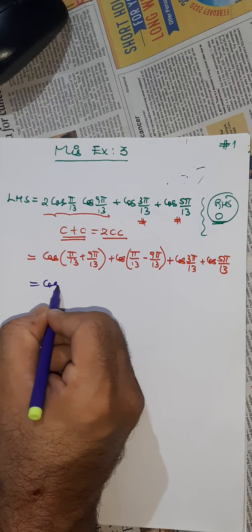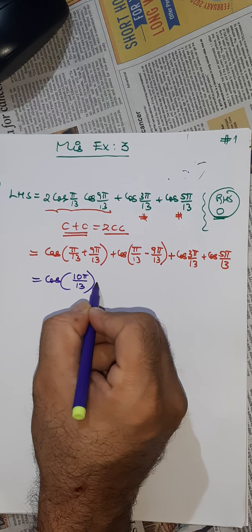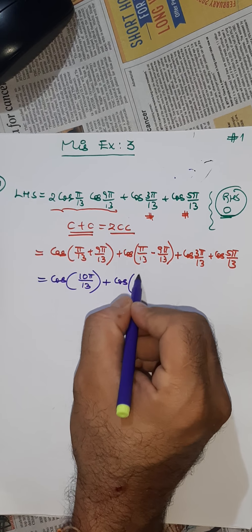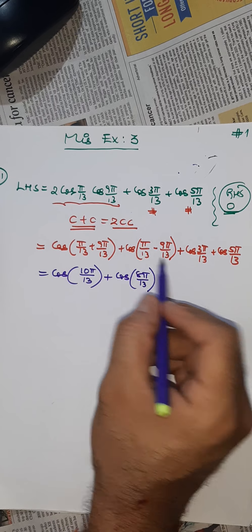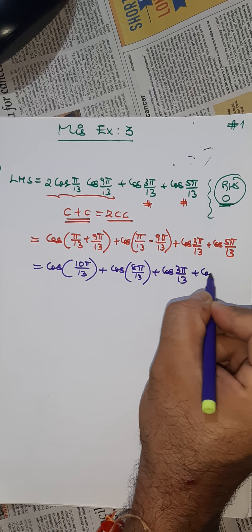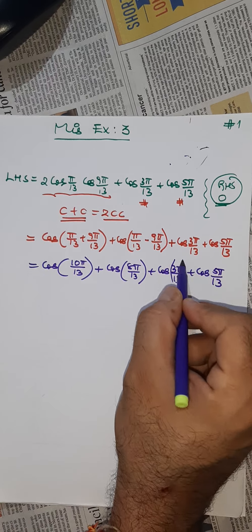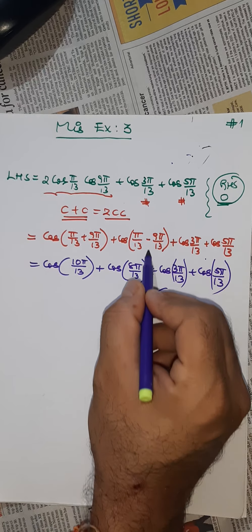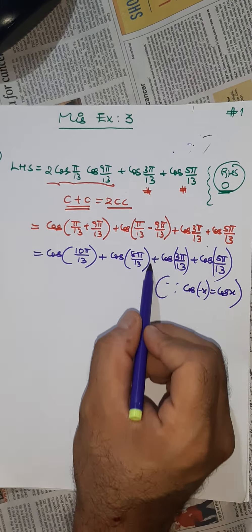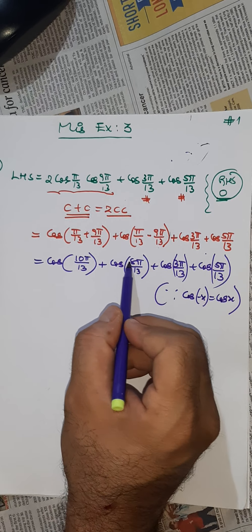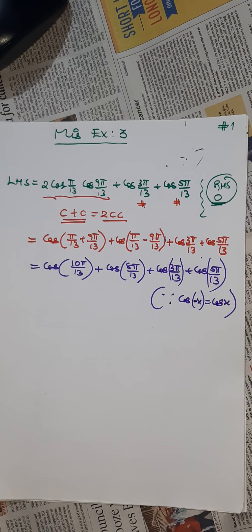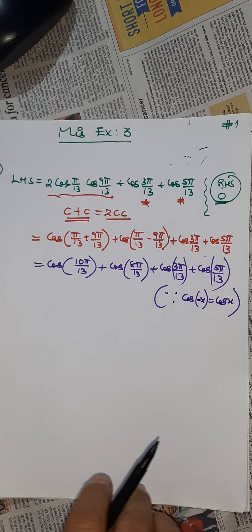Now we simplify: this equals cosine(10π/13) plus cosine(−8π/13). But cos is an even function, so I'm writing cosine(8π/13). Then plus cosine(3π/13) and plus cosine(5π/13). In this step I used the concept cos(−x) = cos(x) — the inner minus has no effect for the cos function.